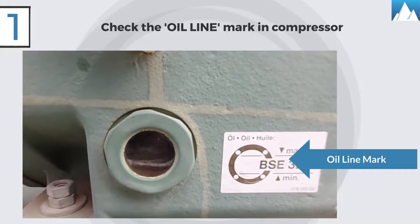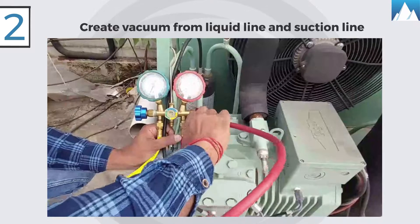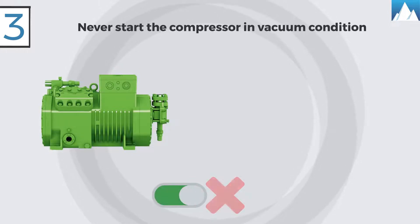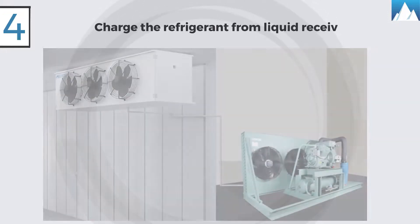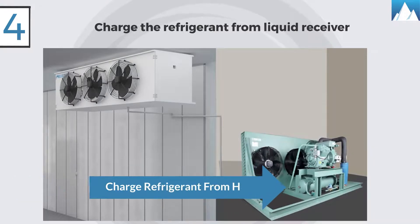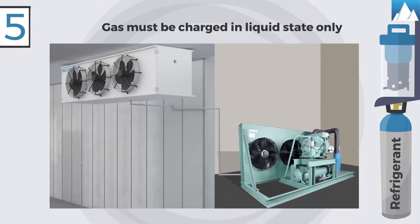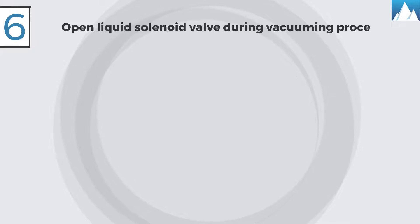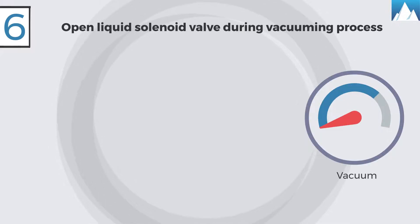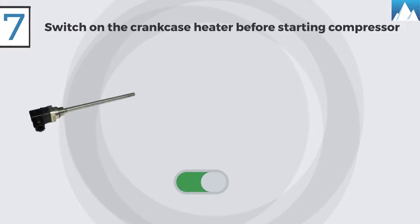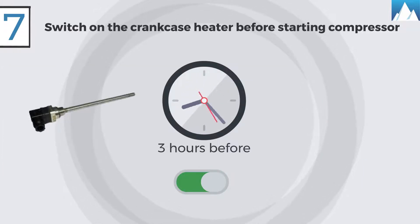Refrigerant charging method: One, the compressor is supplied with oil — check the oil level mark in the compressor. Two, create the vacuum from both liquid line and suction line. Three, never start the compressor in vacuum conditions. Four, always charge the refrigerant from the liquid receiver in the condensing unit. Five, gas must be charged into the system in liquid state only. Six, during the process of vacuuming the system and gas charging, open the liquid solenoid valve.